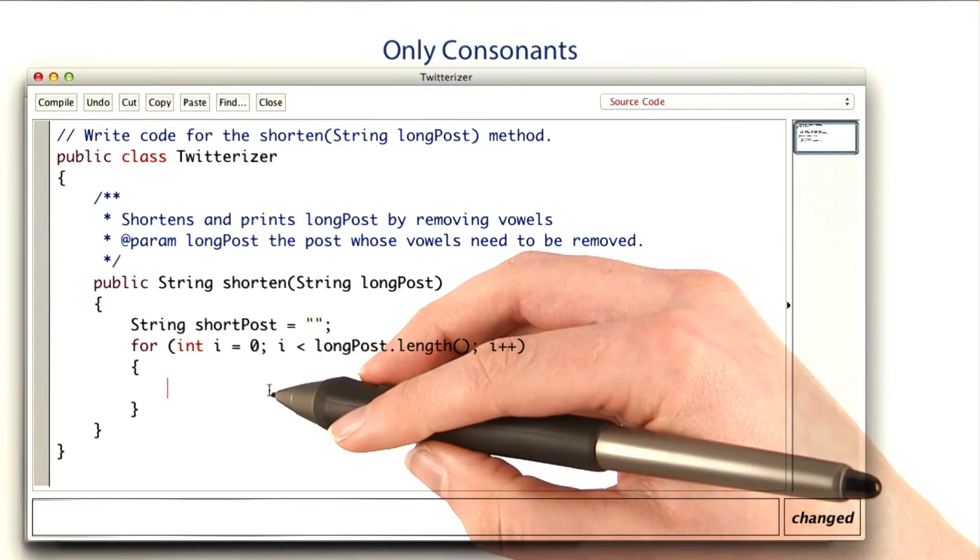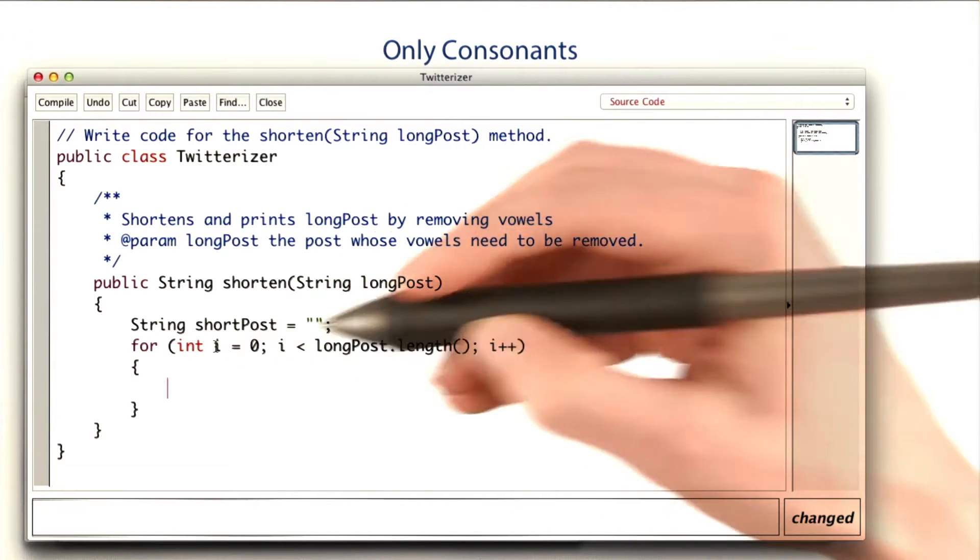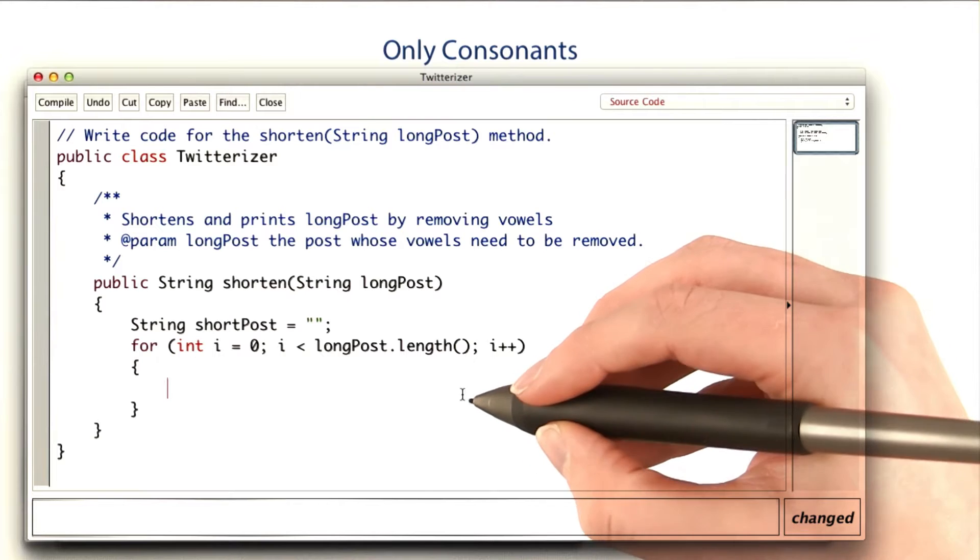Inside the loop, I'll need to check if the ith letter is a vowel or not. And if it's not, I'll add it to short post.